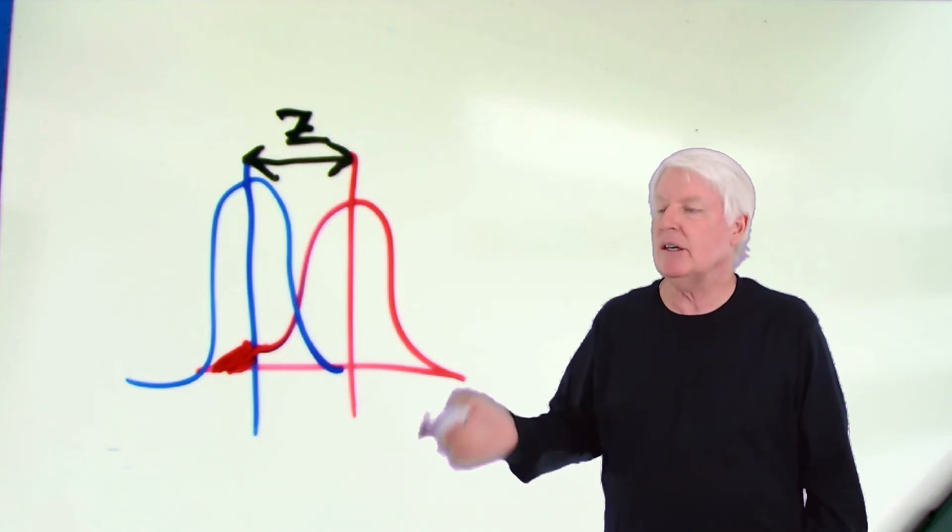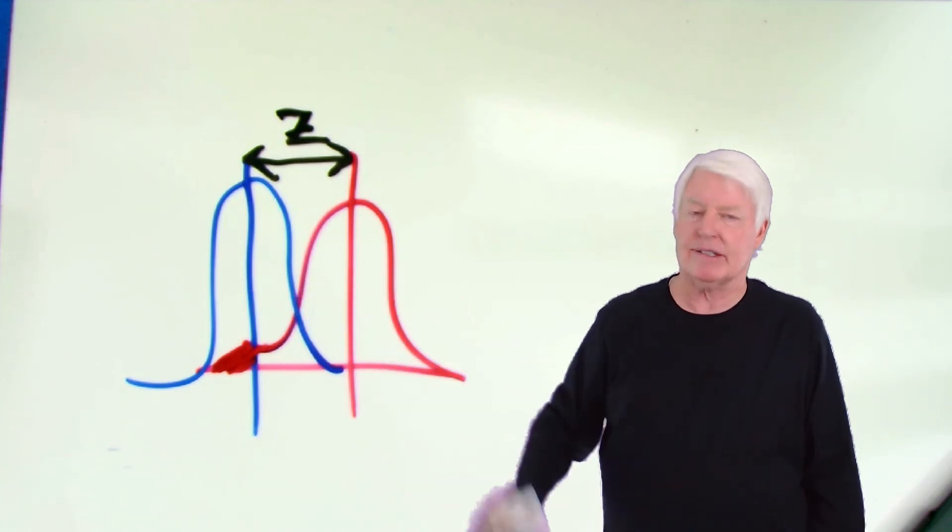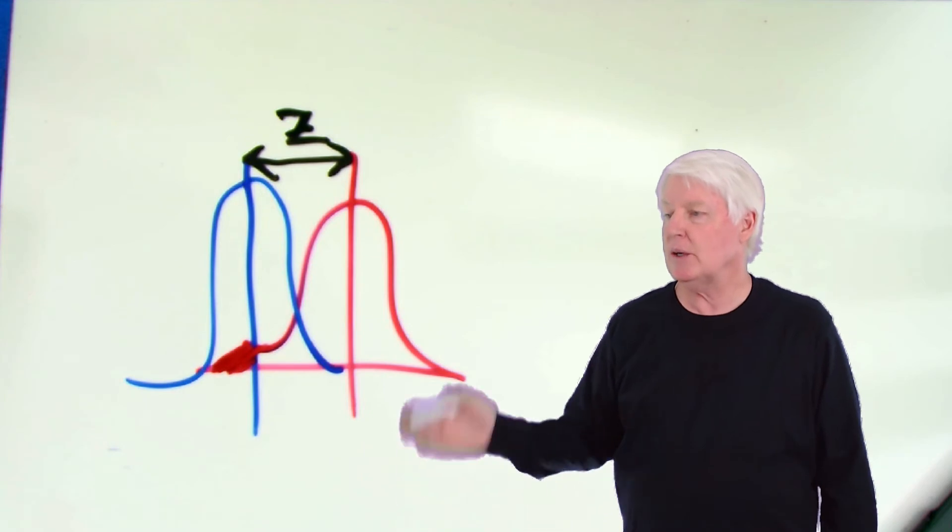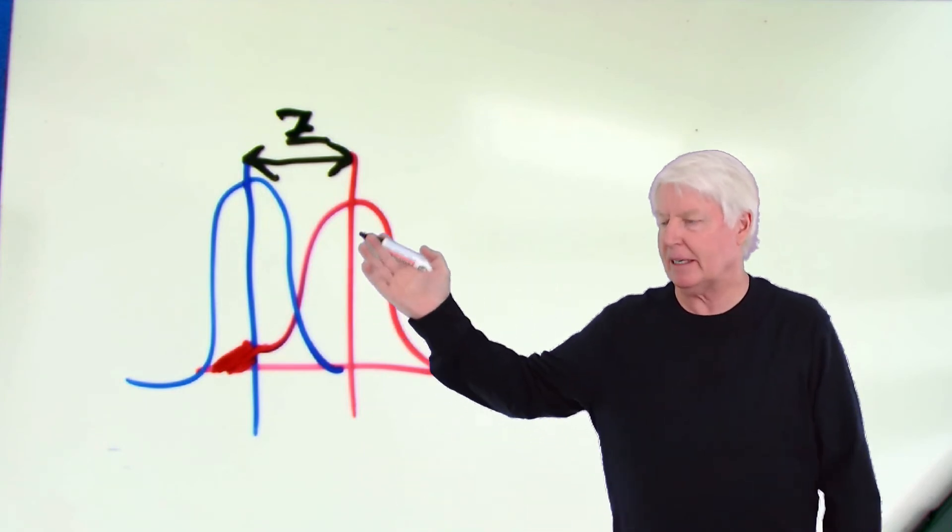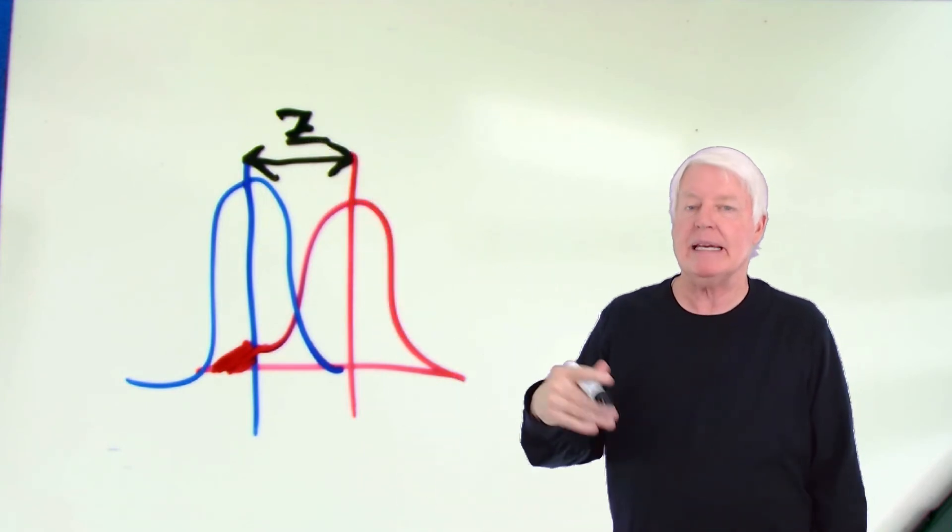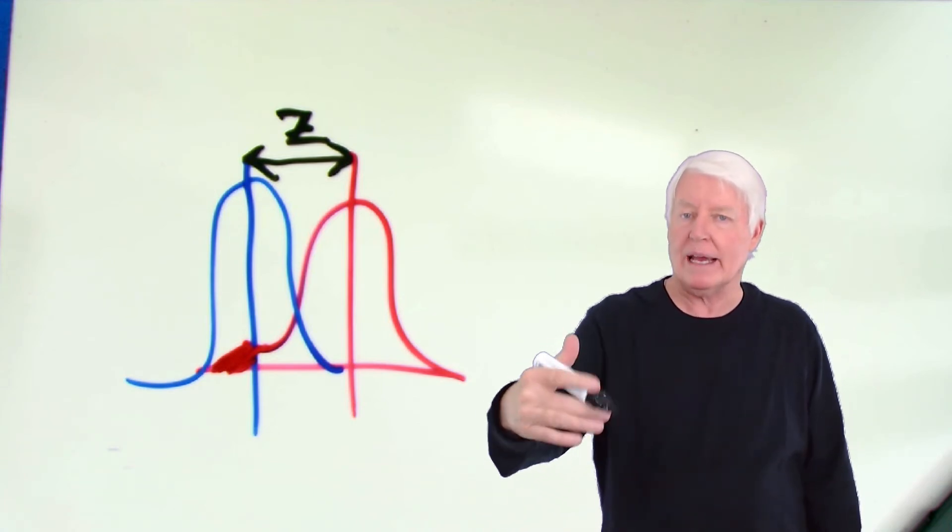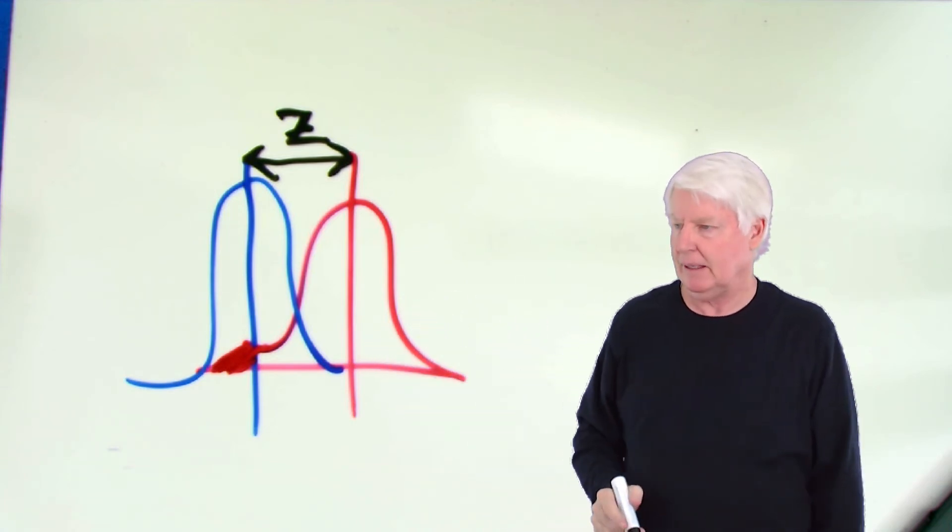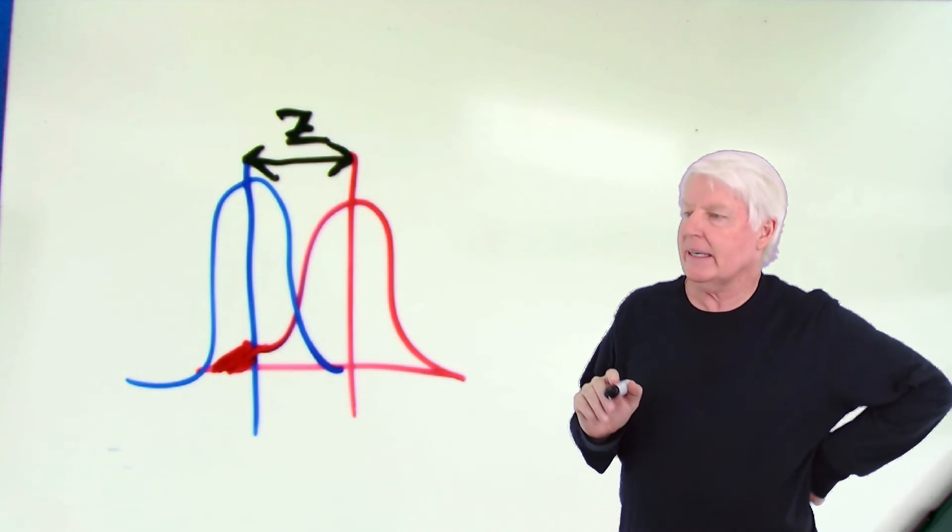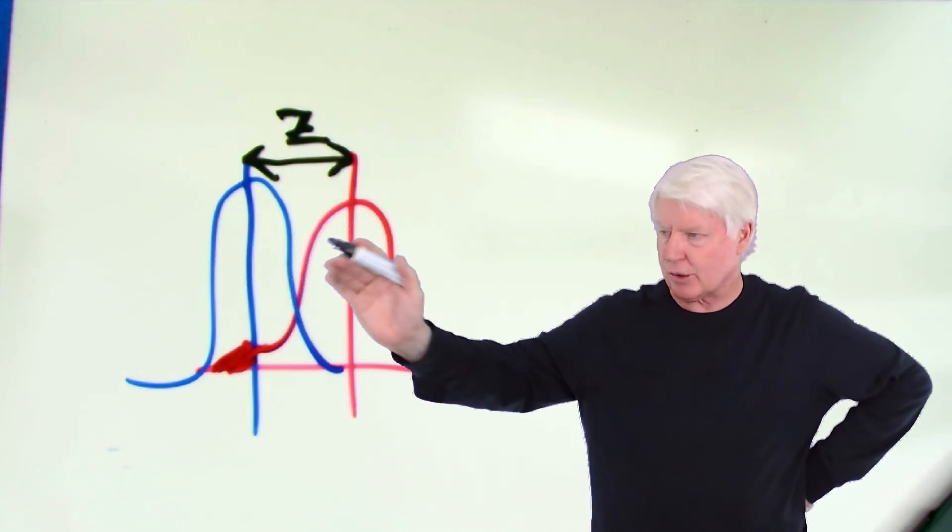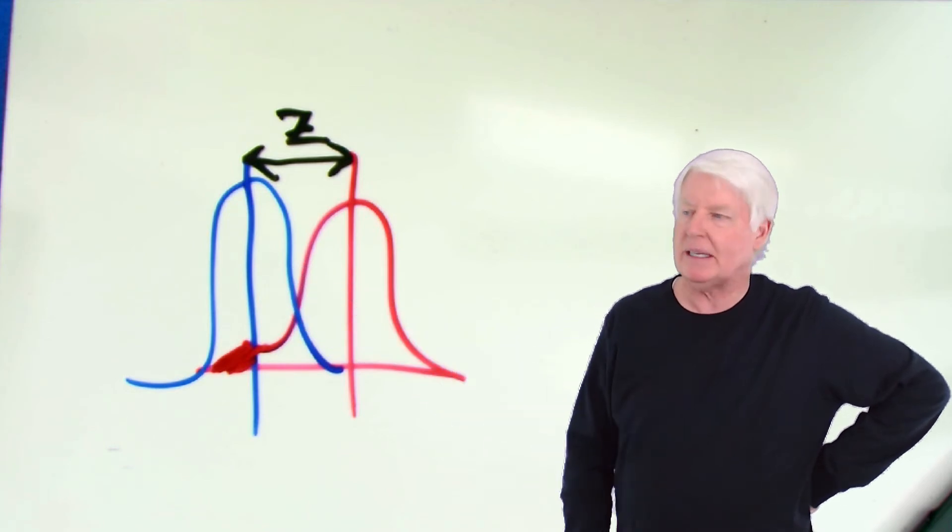Now, we measure this distance from one average to another average. So that will be a Z statistic, the number of sigmas that lie between the red curve and the blue curve. So see, Z can be used for anything that we're measuring distance between distributions or from the average to a spec limit. It doesn't matter, but Z just means the number of sigmas. How far away is it? How far away is something in units of sigma?